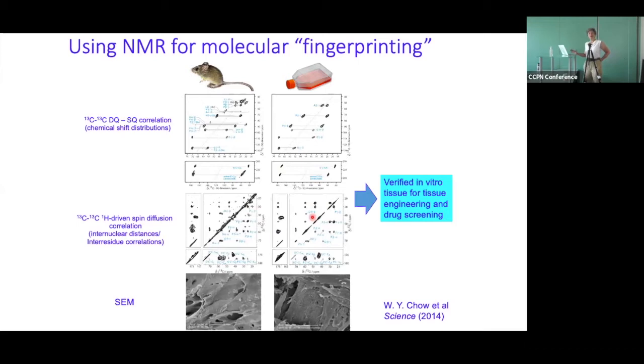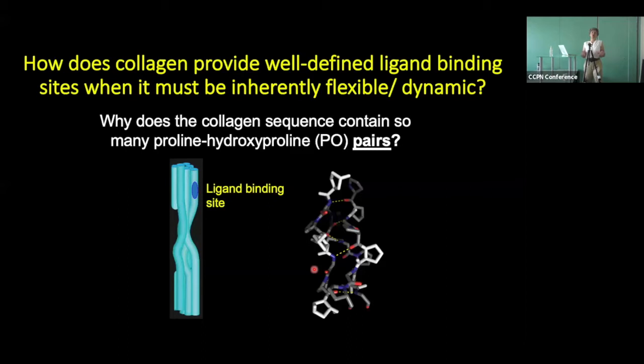Once we've got those in vitro models, we're free to label different proteins, because we can label them at different points in the culture, with different amino acids and different nuclei. So we then start to explore biological questions. One of the first questions is how collagen fibrils can both act as mechanical supports — they're being moved around all the time — but still provide well-defined ligand binding sites on a molecular level.